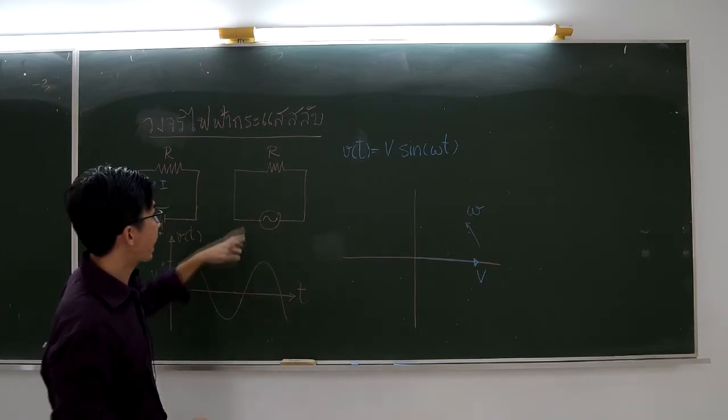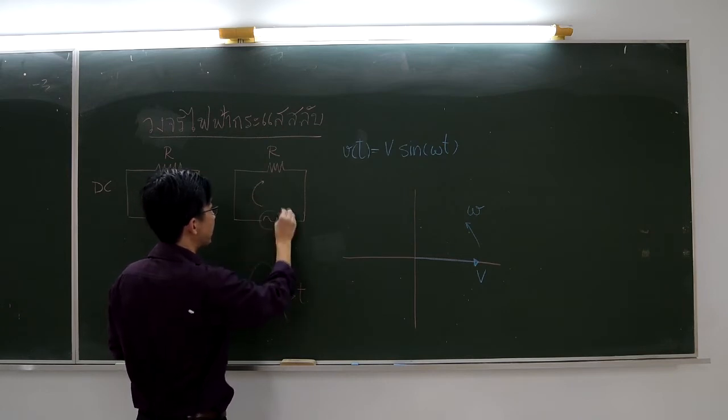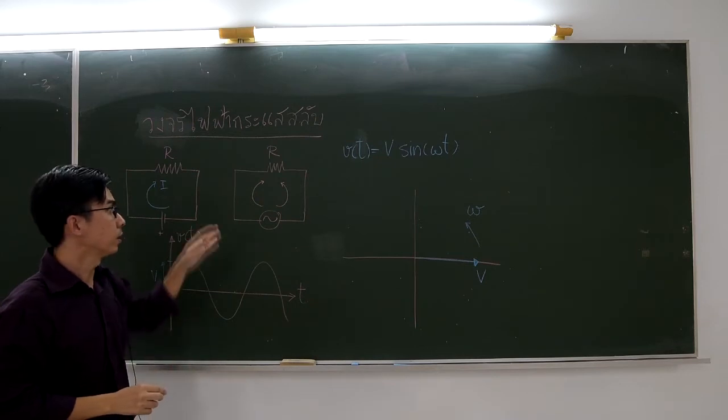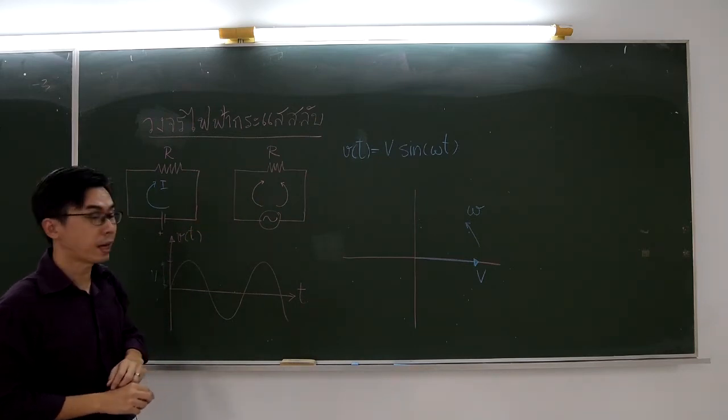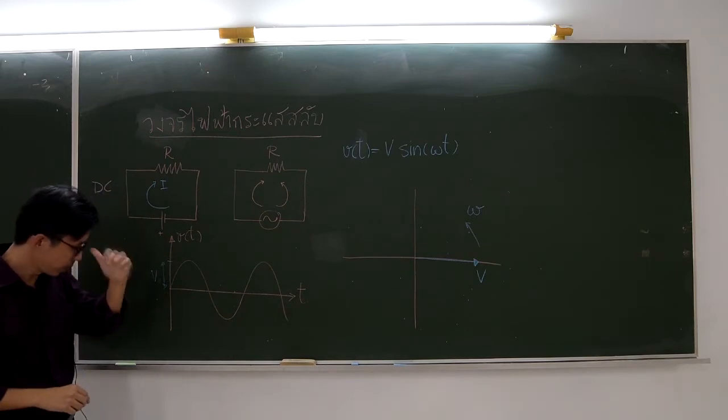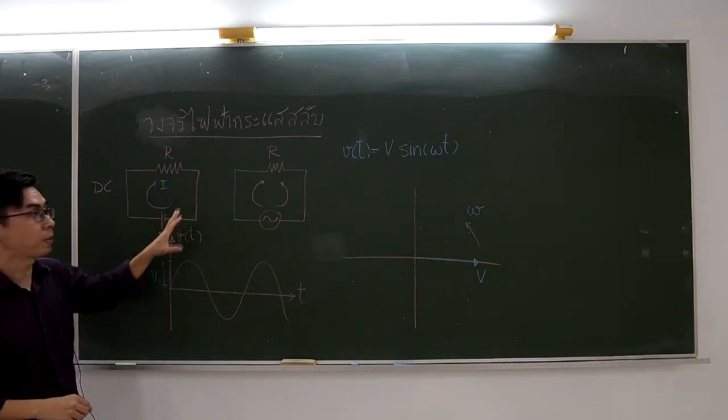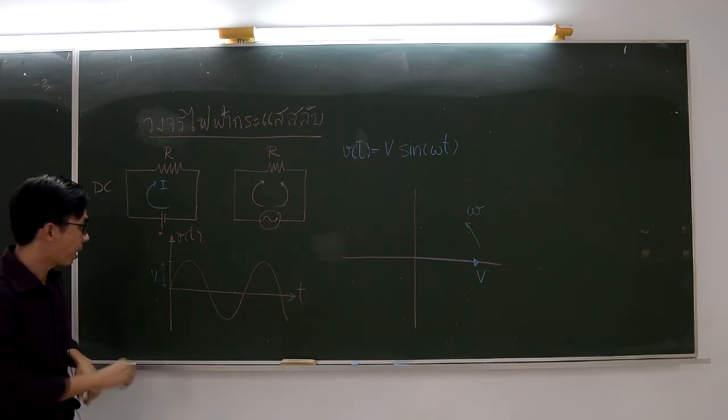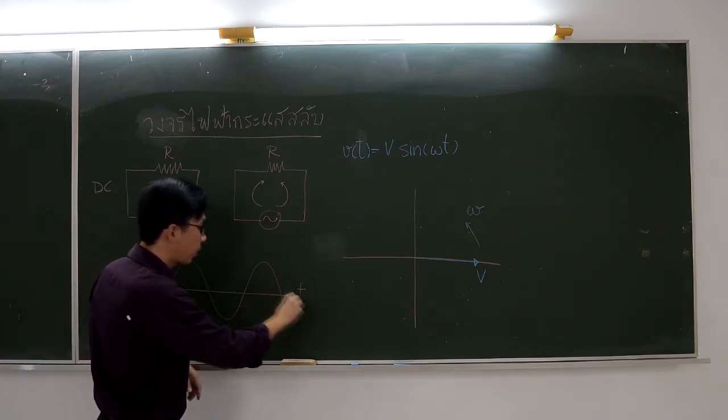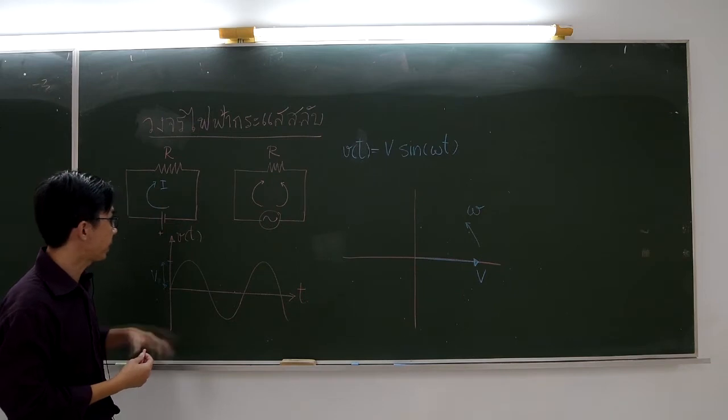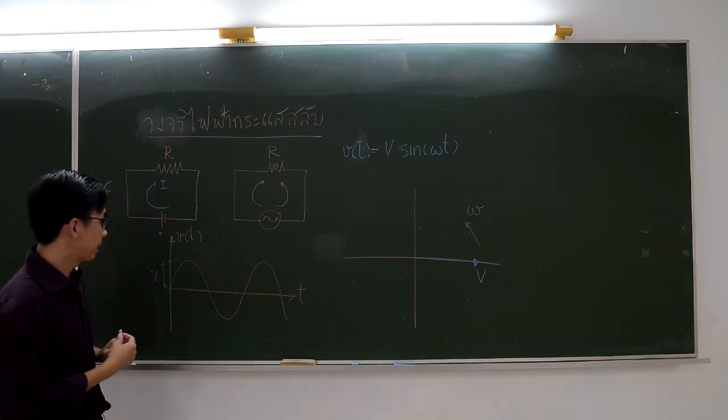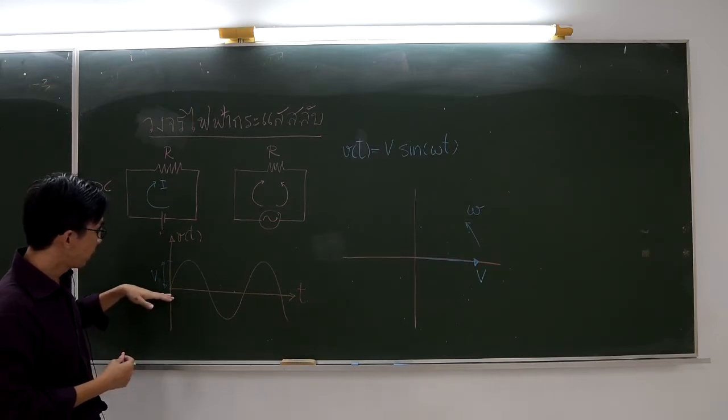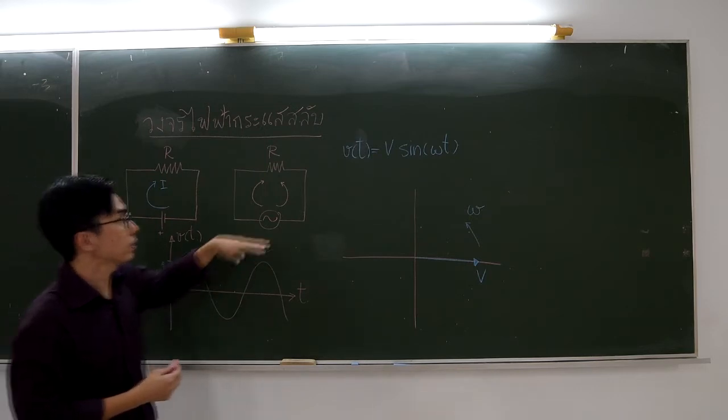In this diagram, the current flows in the clockwise direction. Here, we represent the voltage by a function V. The voltage from a wall socket will fluctuate as a sine function. We can write this voltage as the amplitude, which is uppercase V, times sine of omega t.